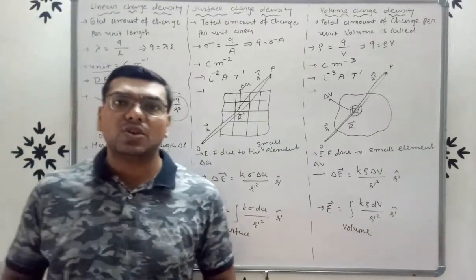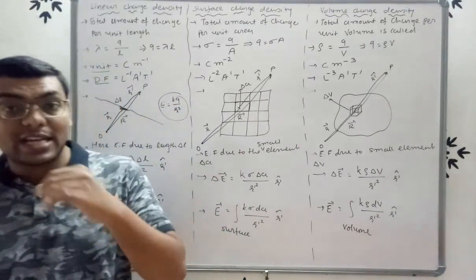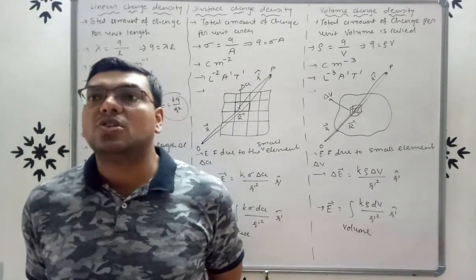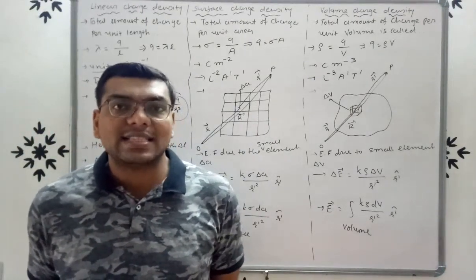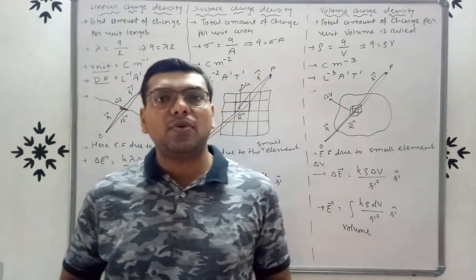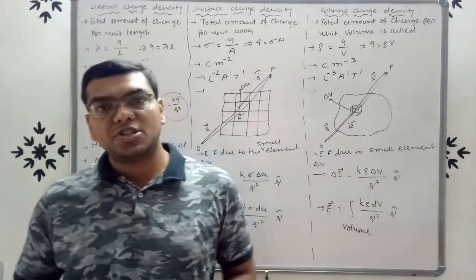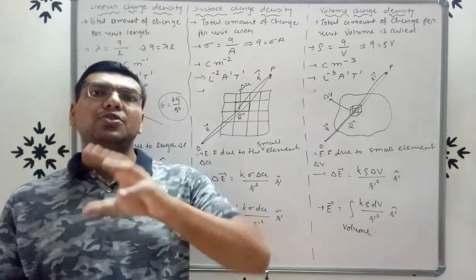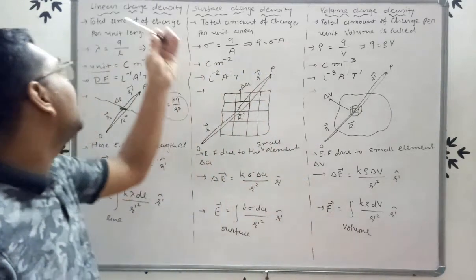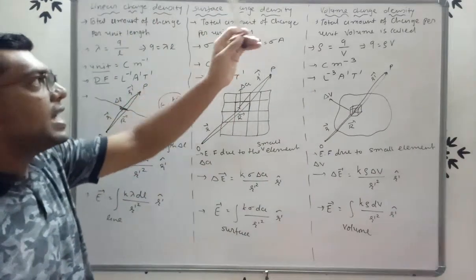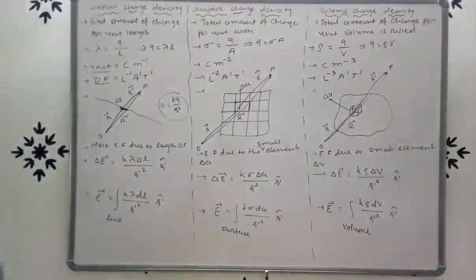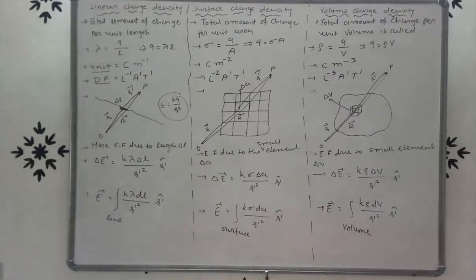These are the uniform charge distributions. The question may also be asked as: explain uniform charge distribution. In that case, you have to explain linear, surface, and volume charge density together.